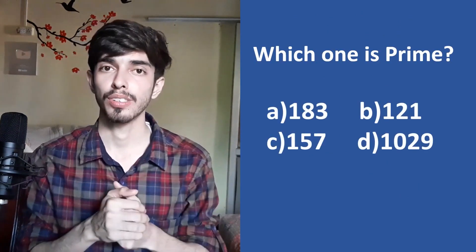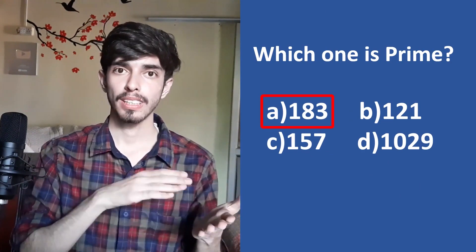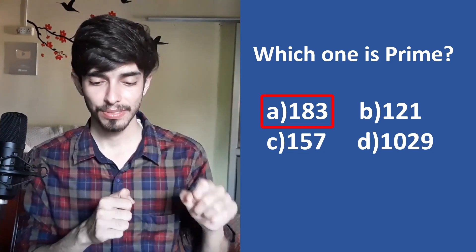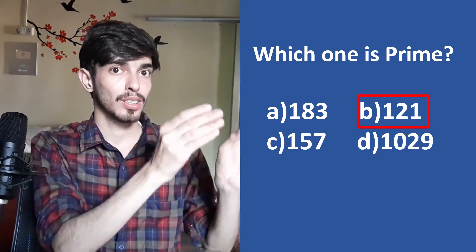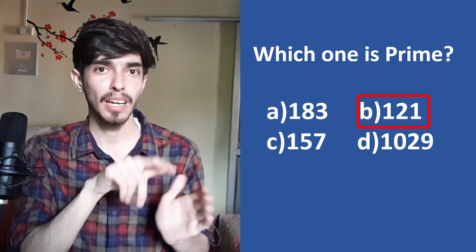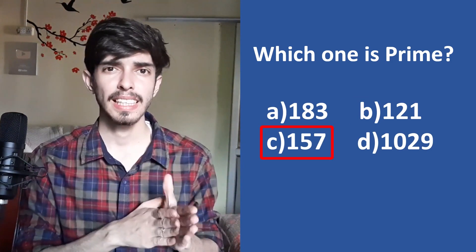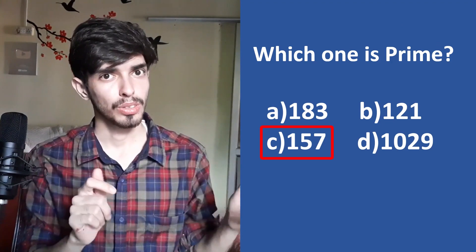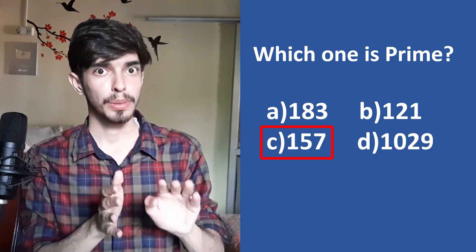Now let's come back to the original question. Check 183 first: 1+8+9=18... wait, 1+8+3=12, divisible by 3 — so 183 is not prime. Next, 121: digits at even positions sum minus odd positions — (1+1)-2=0 — divisible by 11, so 121 is not prime either. Now check 157: 1+5+7=13, not divisible by 3 or 9; last digit is 7, not divisible by 2 or 5.